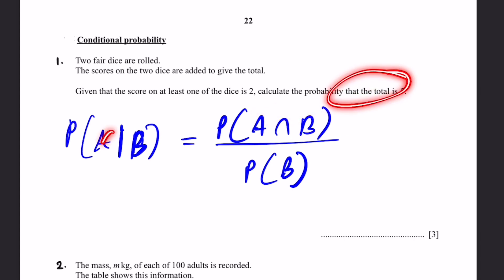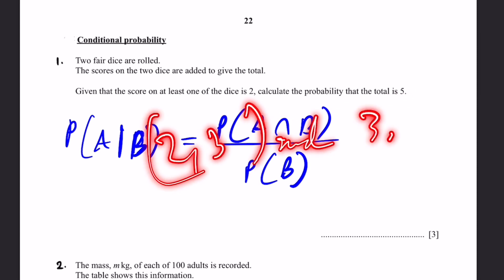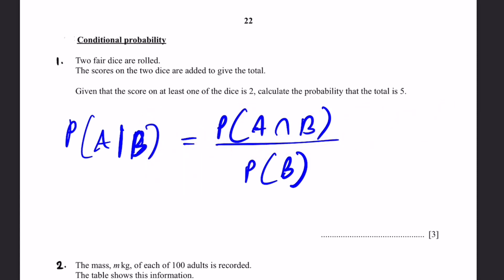And the given event, which is B, is the score on at least one of the dice is 2. So the probability of A intersection B divided by probability of B. So what's A intersection B? That means both of these are true. The score on at least one of the dice is 2 and the total is 5. The only two options for this is 2, 3 and 3, 2. Right? So that's 2 out of a whole of 36 total options.